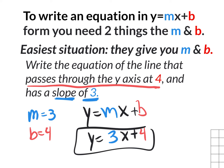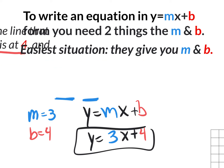This is the easiest situation where they give you the m and they give you the b. All you do is take the m, take the b, and plug it right in. That's the absolute easiest situation.